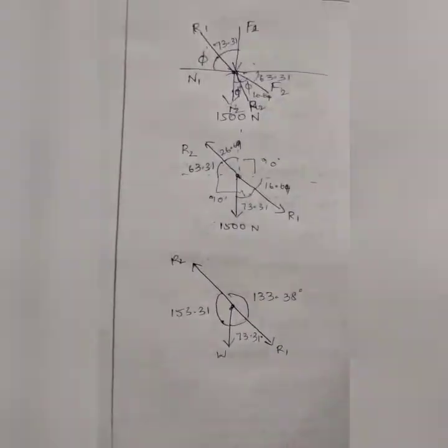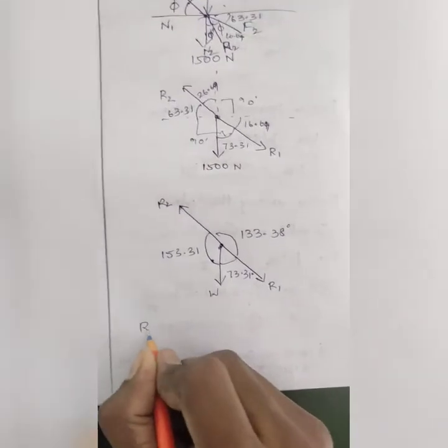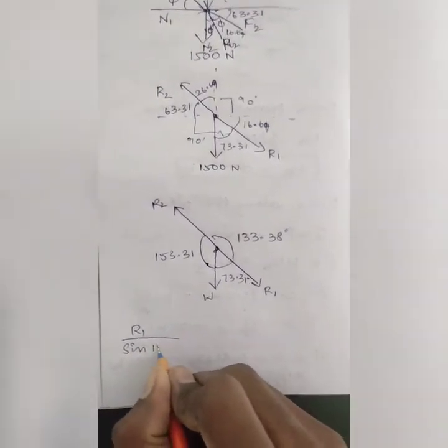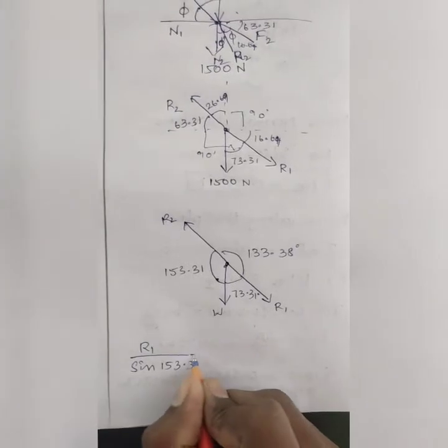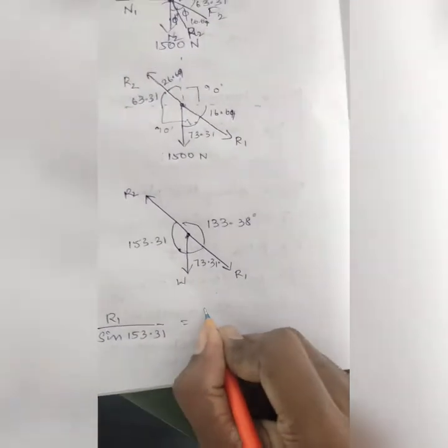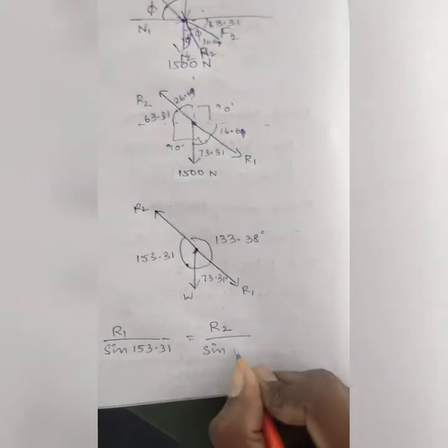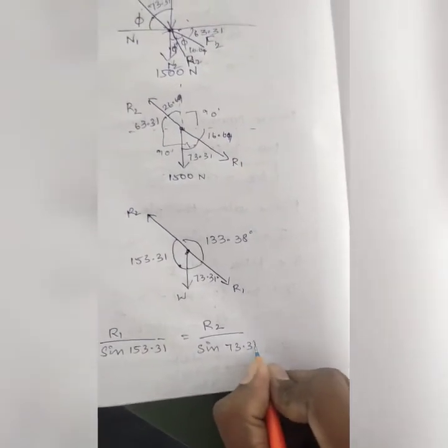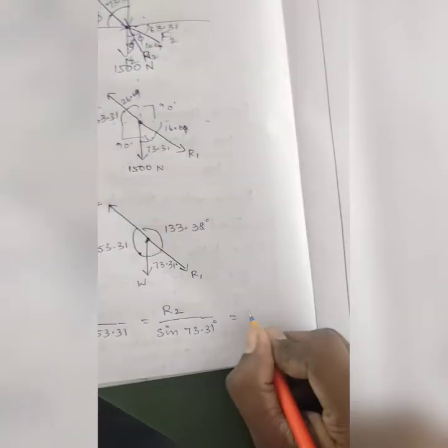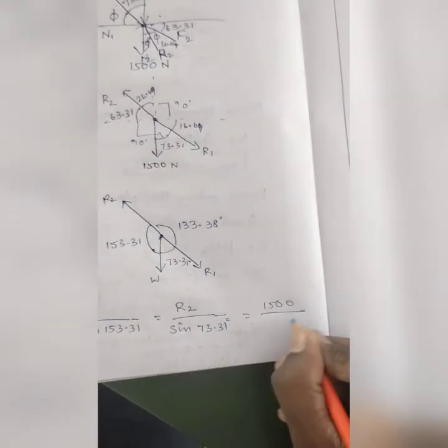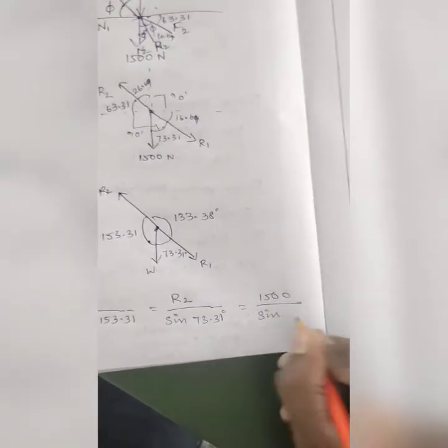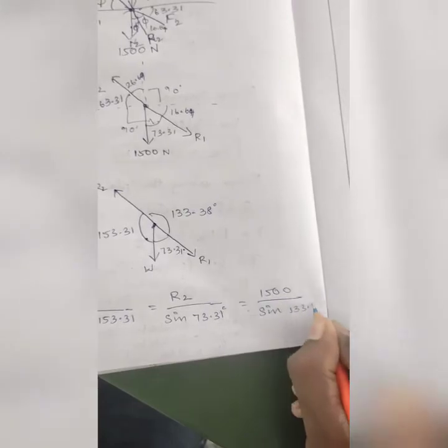Now applying Lami's theorem: R1 by sin of 153.31, which is equal to R2 by sin of 73.31, is equal to 1500 by sin of 133.3.